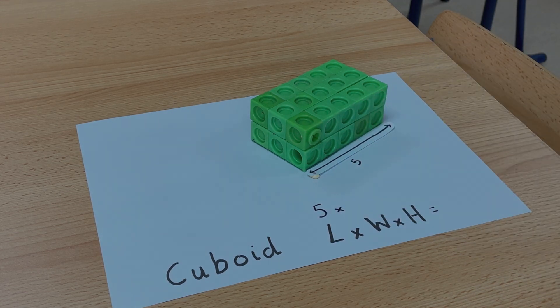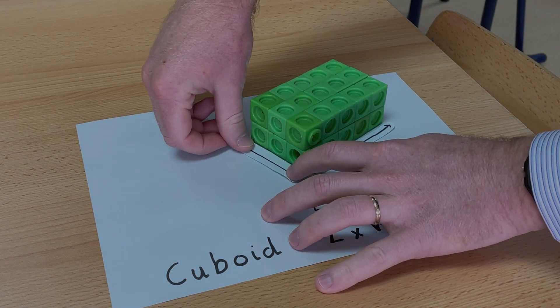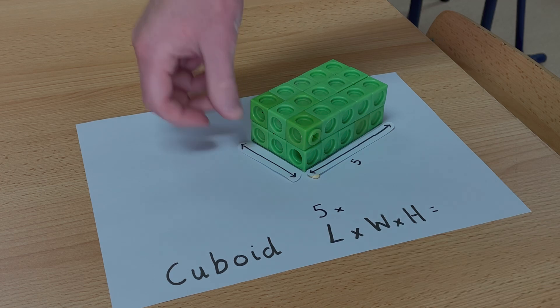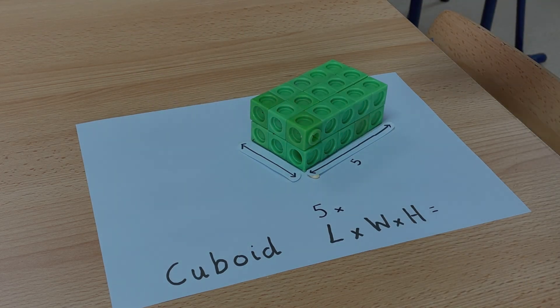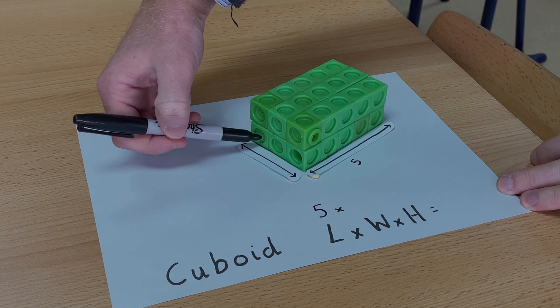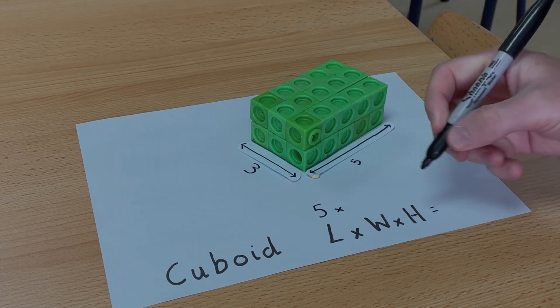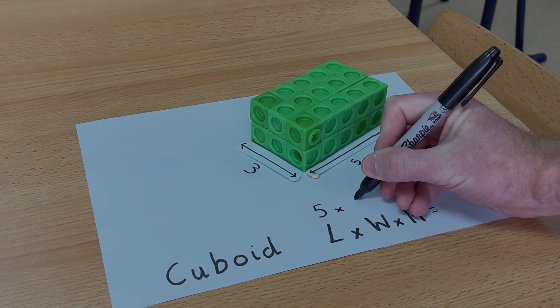Now I need to find the width. The width is this part of the shape here. And I can see that the width of this cuboid is 1, 2, 3. So where the width is, I'm going to put 3.